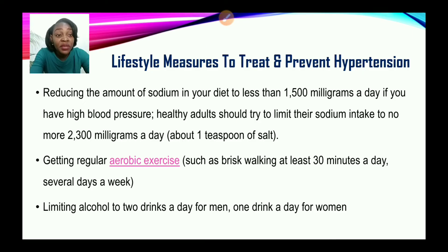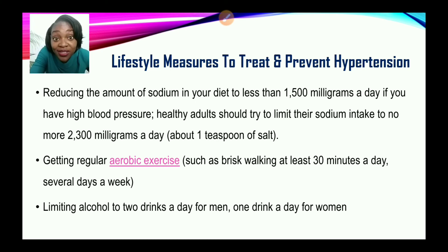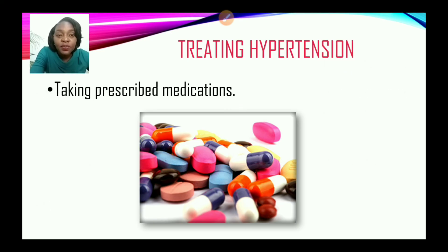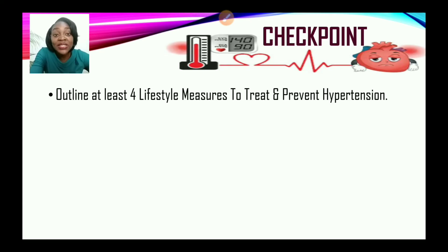Reducing sodium in your diet to less than 1,500 milligrams a day if you have high blood pressure. Healthy adults should try to limit sodium intake to no more than 2,300 milligrams a day — that is about 1 teaspoon of salt. Getting regular exercise such as brisk walking for at least 30 minutes a day, several days a week. It is very important to limit alcohol to 2 drinks a day for men or 1 drink a day for women. Persons may also have to take prescribed medications. Outline at least 4 measures to treat and prevent hypertension.